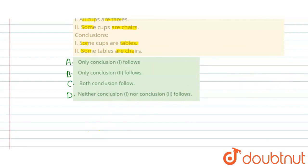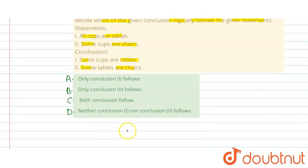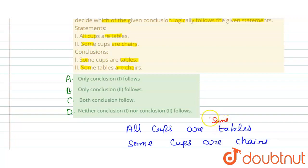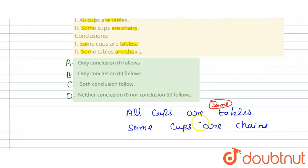Okay, so let's see one by one. First statement: all cups are tables. And the second one is some cups are chairs. So we will take all cups and some cups are chairs. That means some cups are tables and some tables are cups. Okay, and here we will study our conclusion. All cups are tables, this is true, and some tables are cups, this is true.